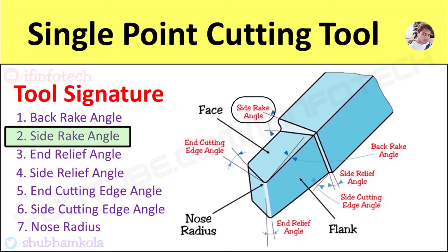Next is side rack angle. It is the angle between the surface of the flank immediately below the point and a line down from the point perpendicular to the base. Side rack angle is the angle by which the face of the tool is inclined sideways. It determines the thickness of the tool behind the cutting edge.